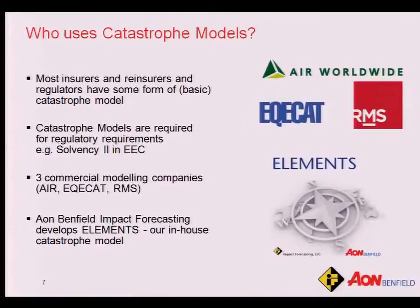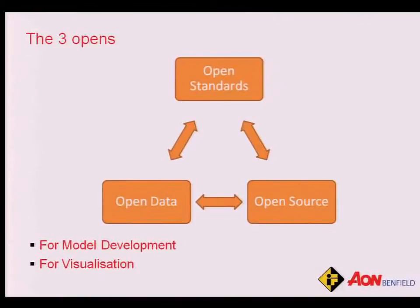Has anyone heard of the top three — AIR, Equicat, and RMS? These are the big three commercial modeling companies; anyone can use that software off the shelf. We're developing our own platform called Impact Forecasting Elements. So we have open standards, open data, and open source software, and I'll show you in the next few slides how we're using a combination of all of these in our model development and visualization.